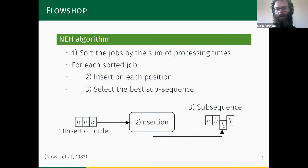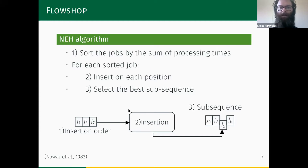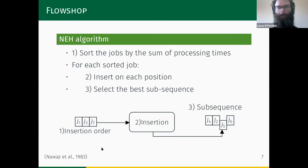A very common and well-studied heuristic to solve flow shop problems is the NEH algorithm. It is a constructive algorithm composed of three steps: first, it sorts jobs by the sum of their processing times; then for each job it removes it from the sorted position and inserts it into a subsequence iteratively at every possible position; finally it selects the best subsequence until the final solution is constructed. There are also many variants that modify the initialization order and tie-breaking for subsequence selection.